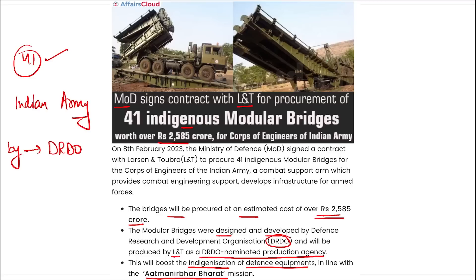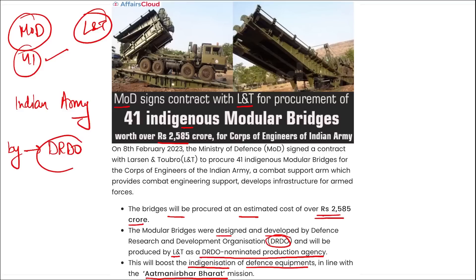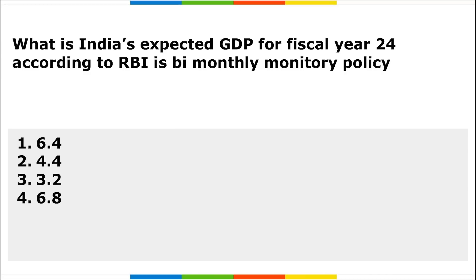To remember: 41 modular bridges were procured by the Ministry of Defense, from L&T, built by DRDO, for the Indian Army, at a cost of ₹2,585 crore.